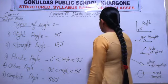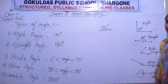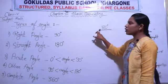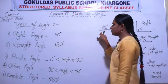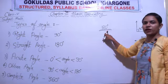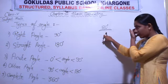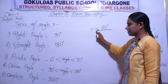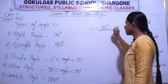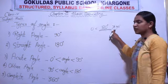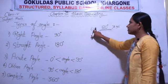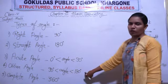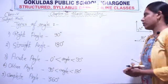For example, if I write 120 degrees and ask which angle it is: to be a right angle it must be 90 degrees — but here it is 120, so no. To be a straight angle it must be 180 degrees — but it is 120, so no. Is 120 greater than 0? Yes. Is it less than 90? No — 120 is greater than 90. So 120 degrees follows the condition of an obtuse angle, and 120 degrees is an obtuse angle.